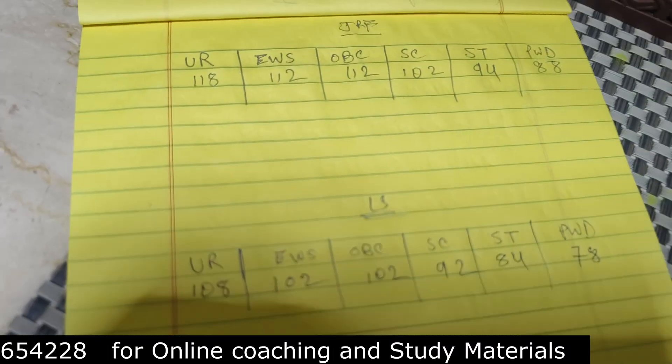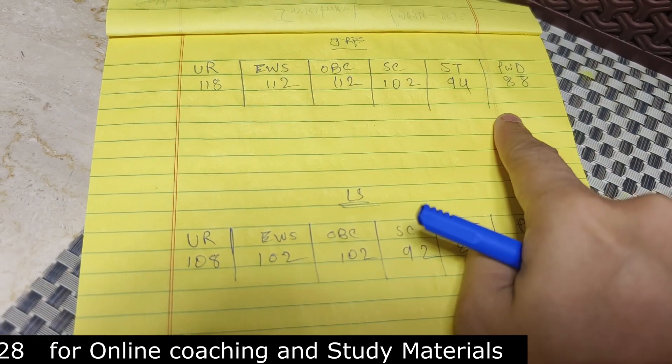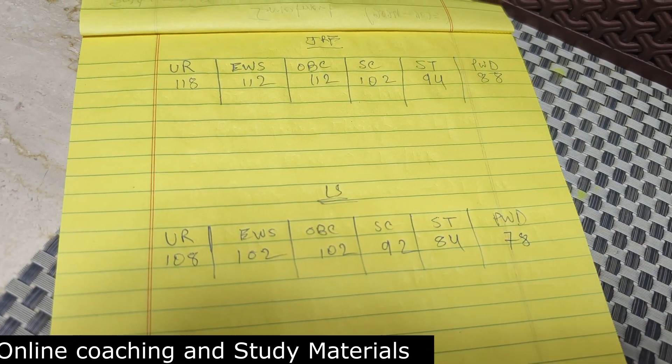this is 92, this is 84, and this is 78 for PWD. So this is the marks distribution, JRF done, LS done.